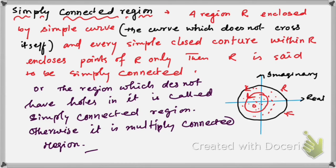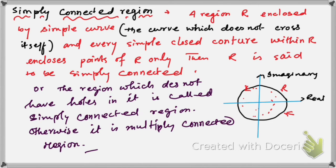Hopefully you have understood what simply connected and multiply connected regions are. Now, what do we mean by a contour? You can see the contour drawn here in red. This is the imaginary axis, this is the real axis, and this is the region. Suppose we have a function of complex variable z, and this function is analytic in this region — meaning it is differentiable at each and every point within and close to R.